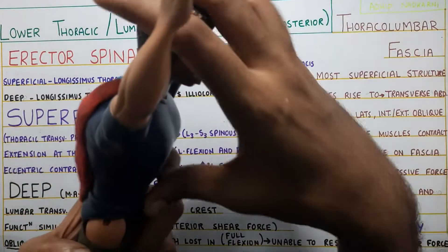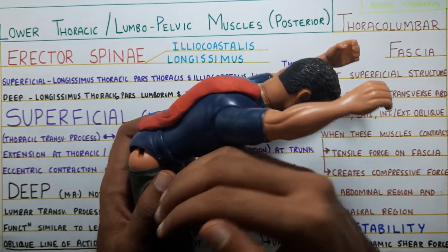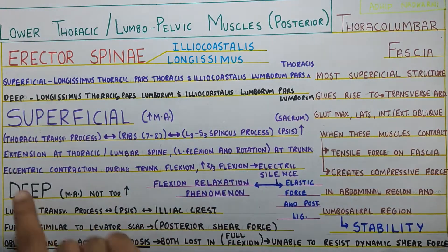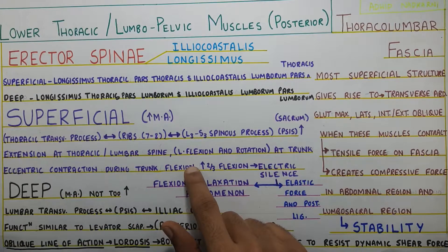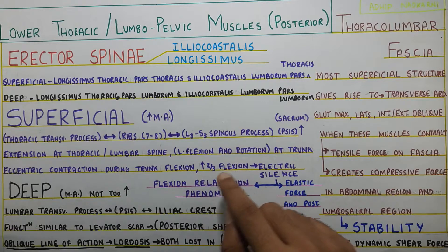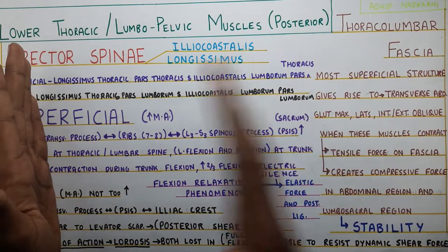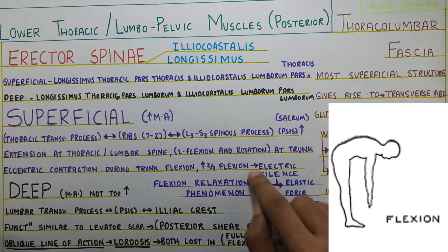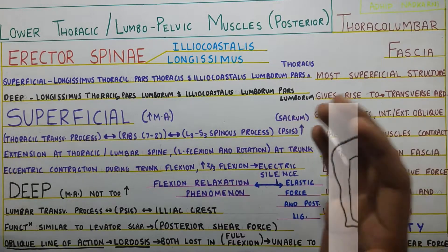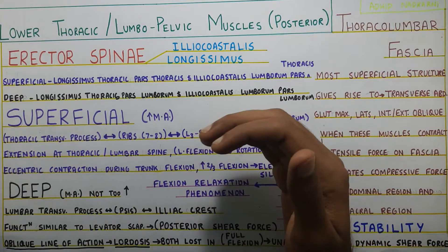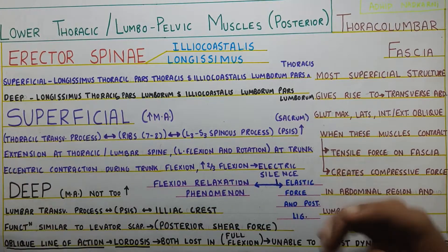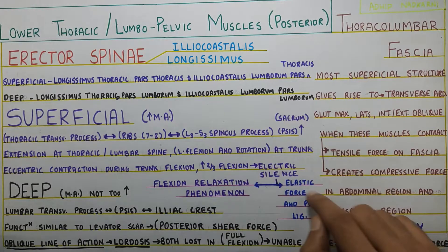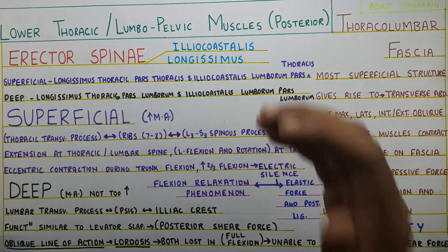The second function of the superficial erector spinae is during flexion — even when you are bending your trunk, it contracts eccentrically. Eccentric contraction means the muscle controls the movement while it is lengthening. So during trunk flexion, this muscle is active eccentrically. However, when flexion exceeds more than two-thirds of the range, it becomes electrically silent — that is, the muscle stops its activity. This is called the flexion relaxation phenomenon: when your trunk is in full flexion, the muscle goes into relaxation, and then the elastic force of the muscle along with the posterior ligaments control that full flexion movement.